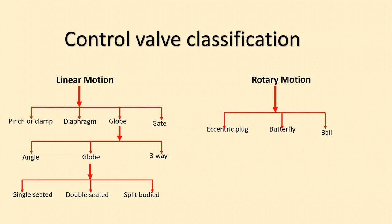For rotary motions, we have three different types of valve body classifications: eccentric plug, butterfly valve, and ball valve. There are still more classifications available in rotary motions with respect to eccentric plug, but we are not going to discuss those in this video. These are the main classifications of control valves based on linear motion and rotary motion.